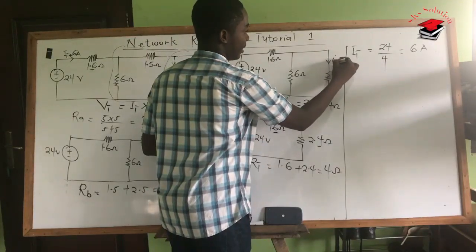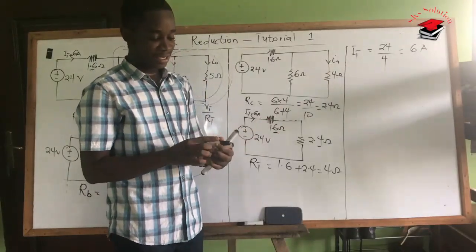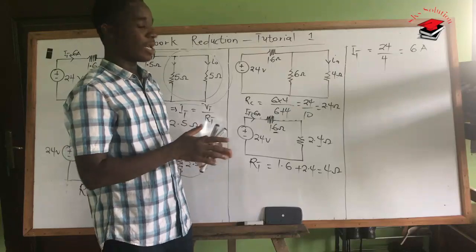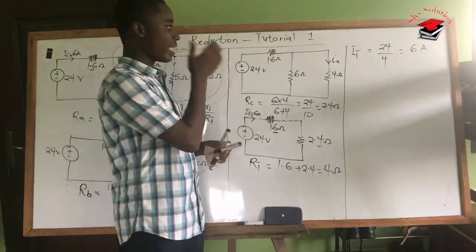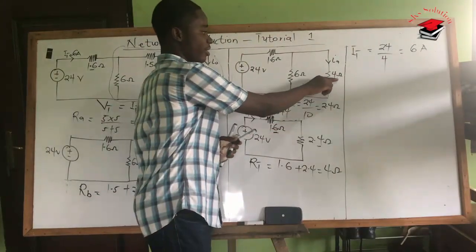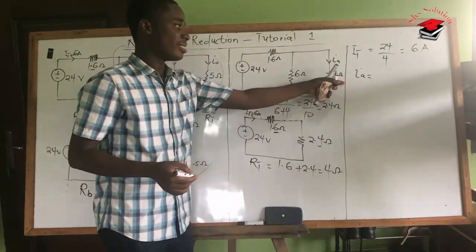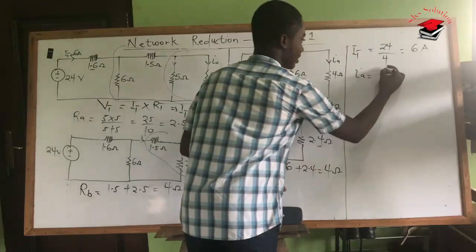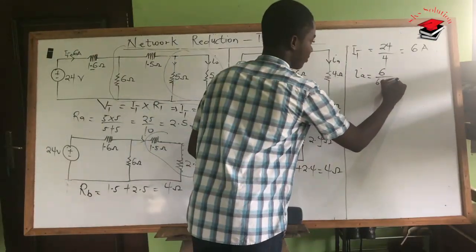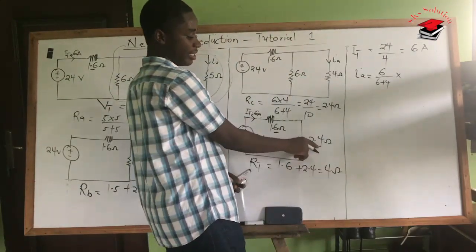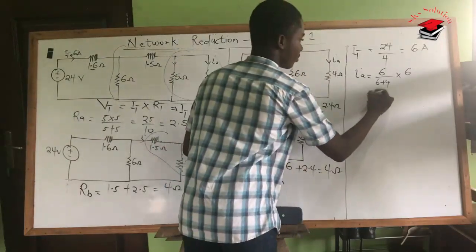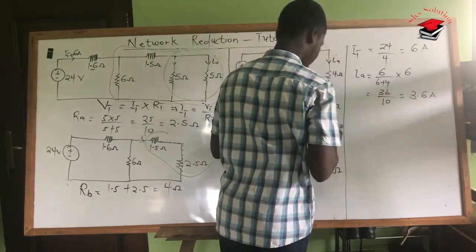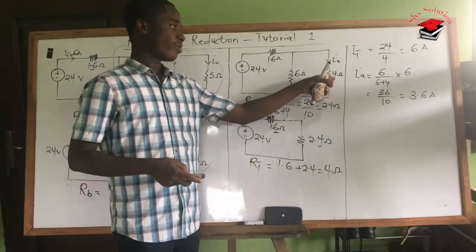Moving back to the previous circuit, we combined 4 ohms and 6 ohms in parallel. If they are in parallel, the current in both equals the current in the 2.4 ohms equivalent. To find the current through the 4-ohm branch — let's call it ID — we apply the current divider rule. The current divider rule states that when resistors are in parallel sharing a current, ID equals the opposite resistor (6 ohms) over the sum of both resistors (6+4), times the total shared current of 6 amps.